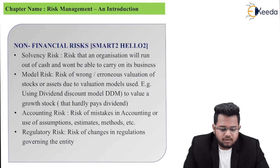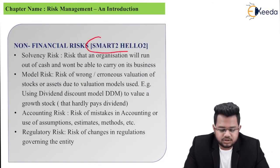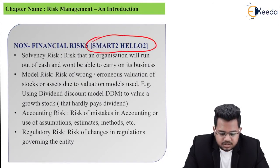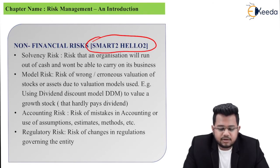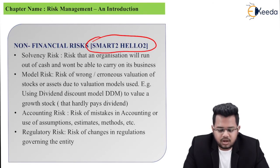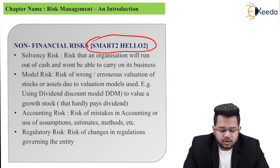Next is non-financial risk. The short form is SMART HELLO — where T gives two answers and O gives two answers as well, so there are two headings under each.